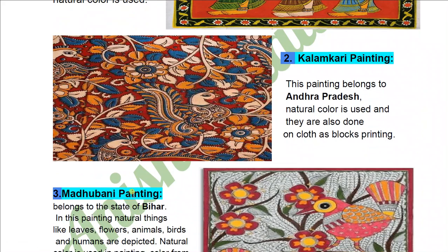Number 2: Kalamkadi Painting. This painting belongs to Andhra Pradesh. Natural color is used and they are also done on cloth as block printing.